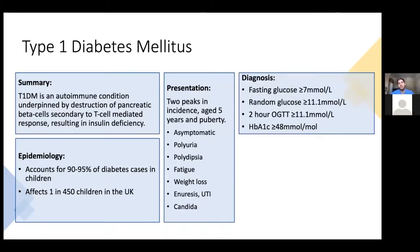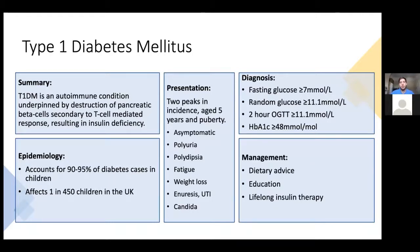For diagnosis you can use fasting glucose or random blood glucose. The two-hour oral glucose tolerance test isn't used much in practice, but its threshold is the same as a random test. HbA1c of 48 or over is also used — sometimes people say it's not used in children, but the guidance supports it. Management involves educating patients about their condition, providing dietary advice, and offering lifelong insulin therapy.